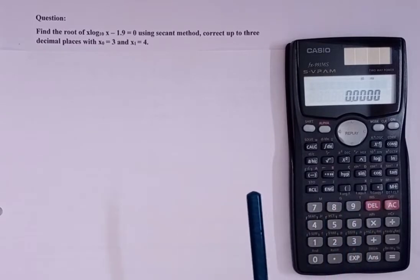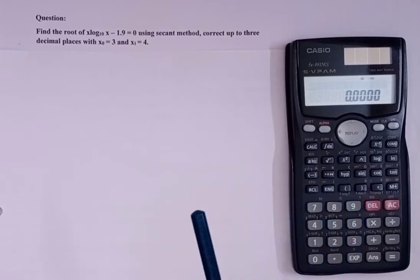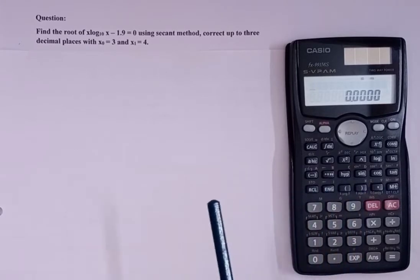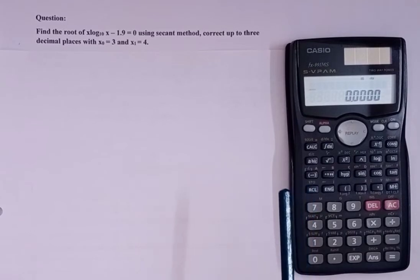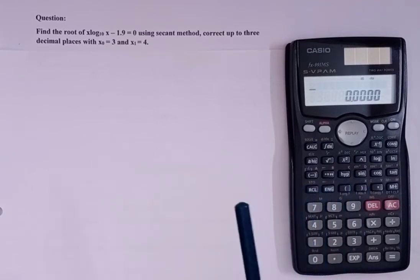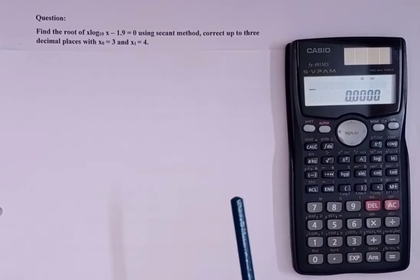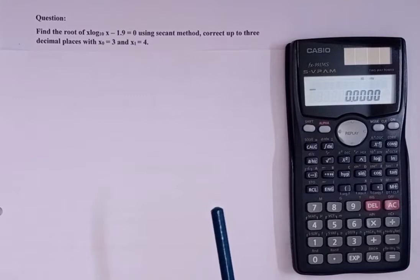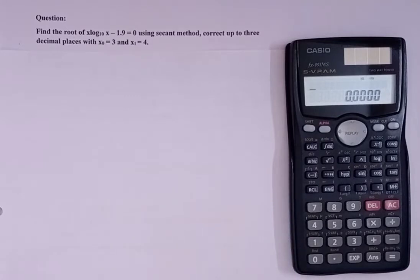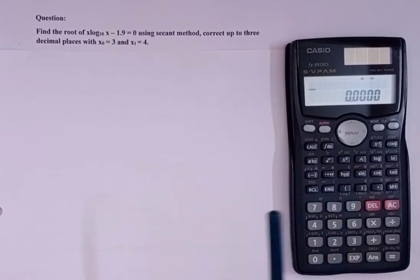The question is: find the root of x·log(x) - 1.9 = 0 using the Secant method, correct up to 3 decimal places, with x₀ = 3 and x₁ = 4. Here, the first approximations have been given in the question. So, x₀ will be 'a' and x₁ will be 'b', and f(x) = x·log(x) - 1.9.